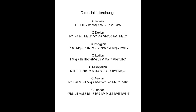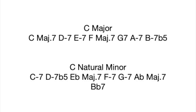For example, in the key of C major, we know that D minor, E minor, F major, G major, A minor, and B minor 7 flat 5 are all available to us.